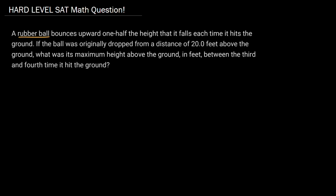So we have a ball that bounces upward at one-half the height that it falls each time it hits the ground. If the ball was originally dropped from a distance of 20 feet above the ground, what was its max height above the ground in feet between the third and the fourth time that it hit the ground?